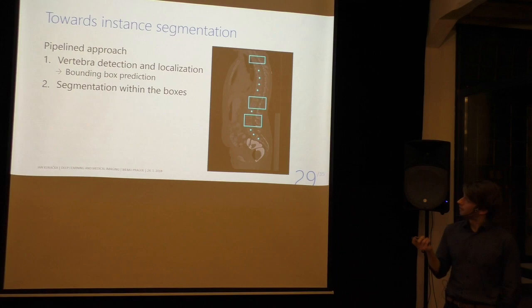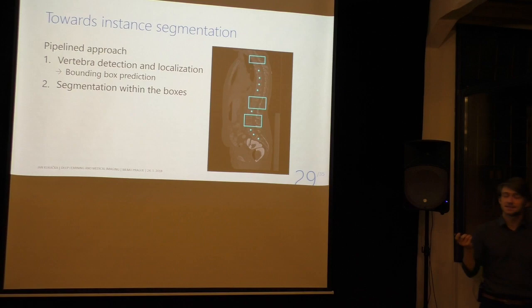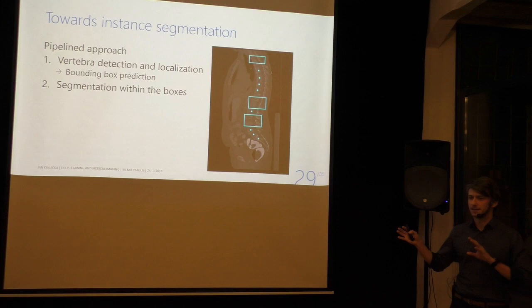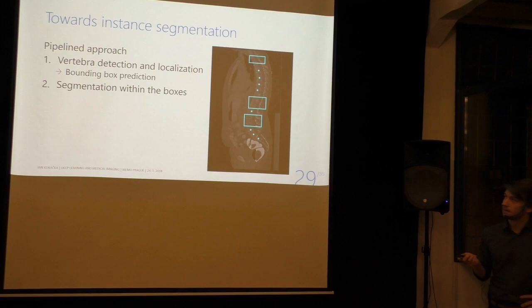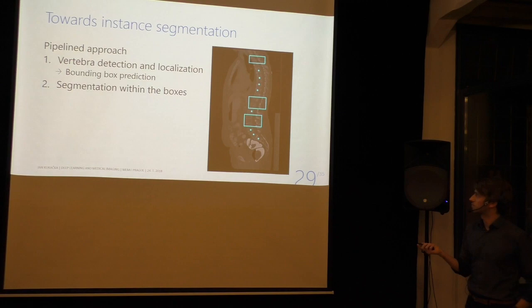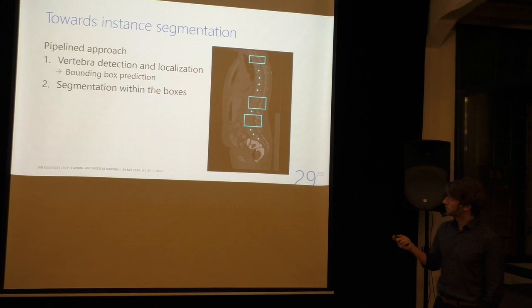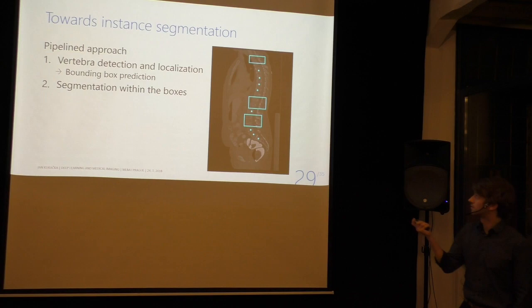Now I'm going to talk about the second step towards instance segmentation. We learned that doing end-to-end from image to pixels probably isn't going to work. So we decided to take what's good about segmentation — if you already know there should be something there, the segmentation works perfectly. If we had bounding boxes around each vertebra, we could just run segmentation within the bounding box and the output would be perfect. So let's focus on how we can detect and localize these vertebrae in the image.